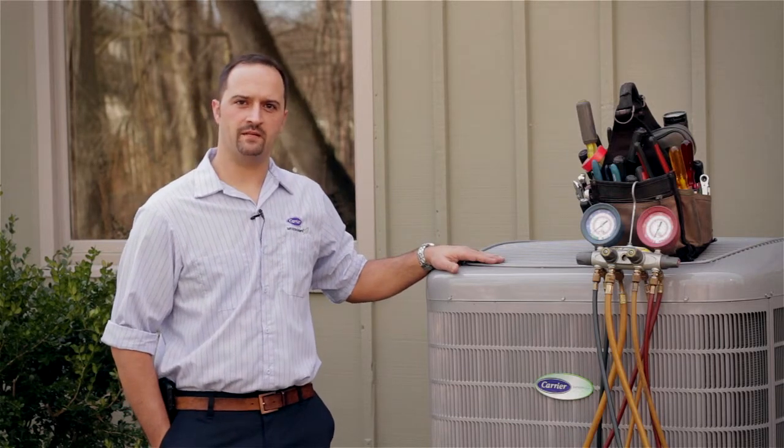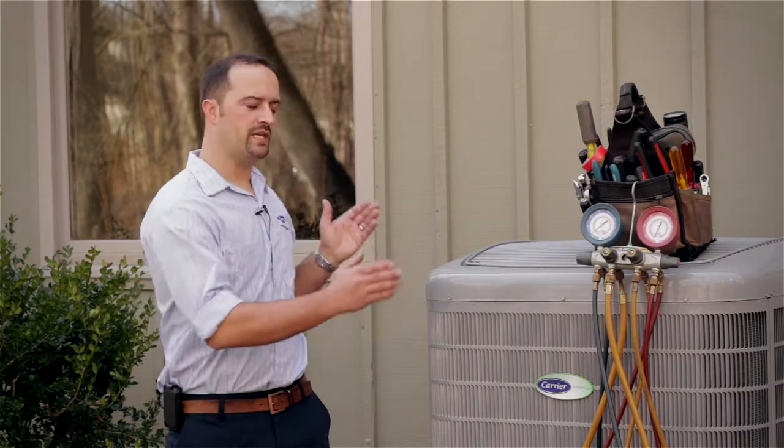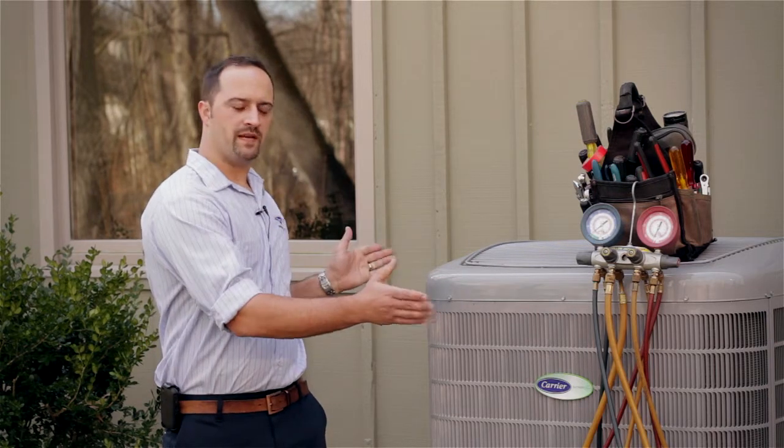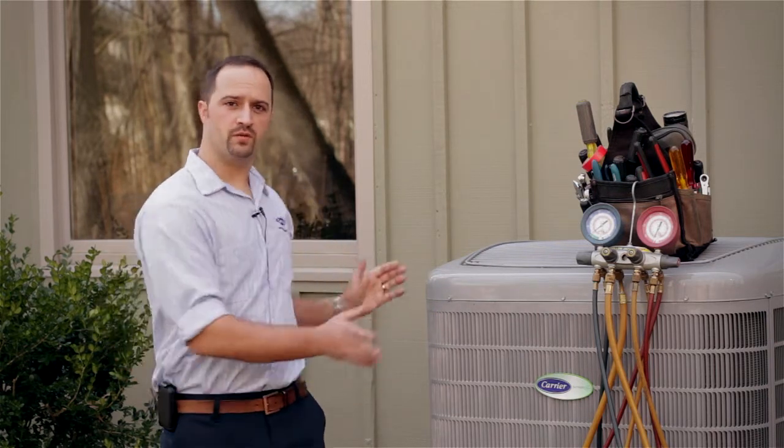The main things that a homeowner needs to look at when maintaining their system is to make sure you keep it nice and clear around the unit. Airflow is the absolute key to maintaining efficiency of the system. So make sure your bushes are trimmed back, make sure when you're mowing your grass you don't blow it towards the coil.